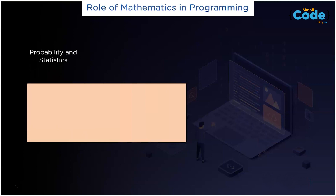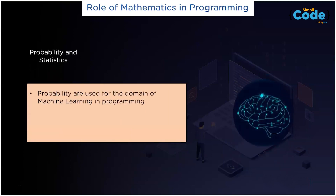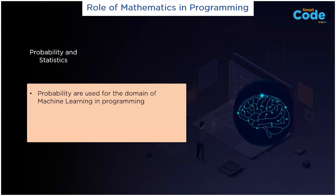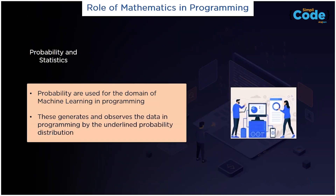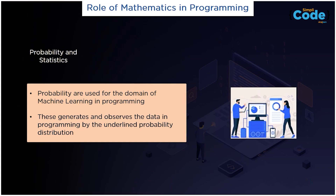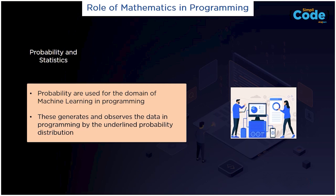Probability and statistics. Probability is used in the domain of machine learning programming. Probability and statistics show up all the time. The entire domain of machine learning is based on probability and statistics. Each machine learning algorithm is modeled by an underlying probability distribution that generates the observed data.